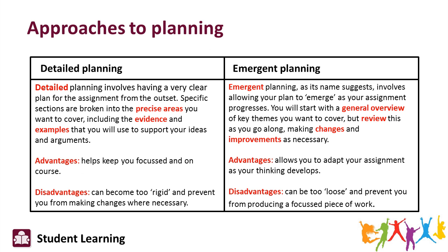Here are a couple of examples of the different types of thinking that are behind the planning process. One is not better than the other and as you'll see both have advantages and disadvantages. Detailed planning is where you have a very clear plan for the assignment pretty much from the outset or certainly very early on in the process. Specific sections are broken down into precise areas and the evidence and examples that will be used are also identified straight away or early on. The advantages of this are that it can help you stay focused and on course. If you take this approach too far, though, it can sometimes become too rigid and might prevent you from being flexible and making changes where these changes would actually help the quality of your assignment.